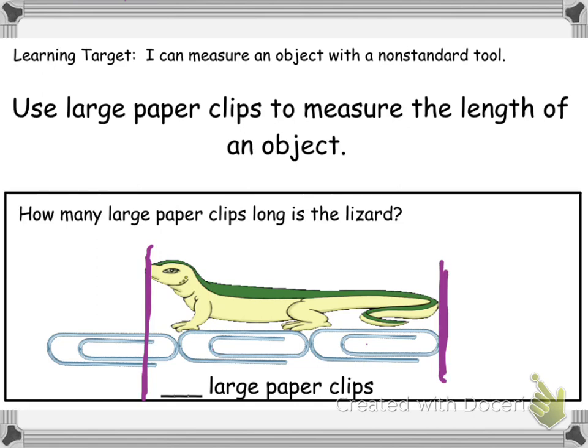...and then the head or nose goes about right here. The lizard doesn't use that much of this third large paper clip, so we are not going to count it, because it does not use more than half or most of it. If it used most of the paper clip, we would count it — but it does not. So we're going to say two paper clips. The lizard is two large paper clips long.